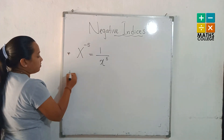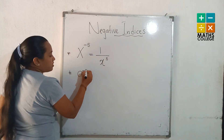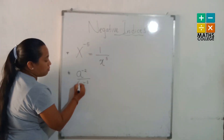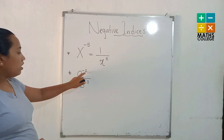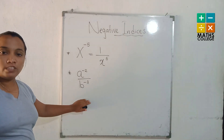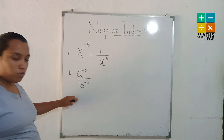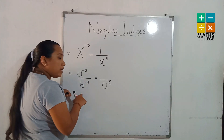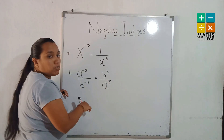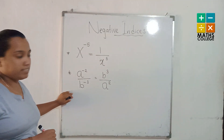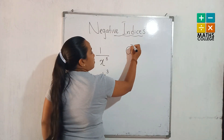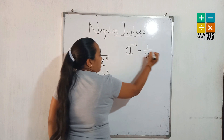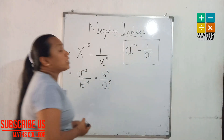Another example: a to the power minus 2 divided by b to the power minus 3. Both are negative indices. To convert to positive, change the positions of numerator and denominator: a goes to the denominator becoming a to the power 2 (positive), and b goes to the numerator as b to the power 3 (positive). This is the third law of the indices: a to the power minus m equals 1 over a to the power m.